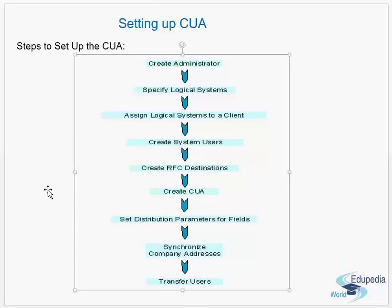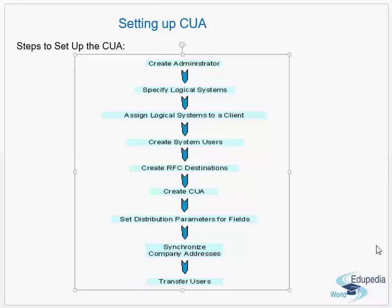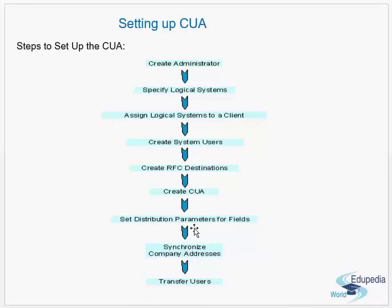You also synchronize company addresses between the source and the target system, and then transfer users. It works on ALE again. You need partner profiles which in turn have RFC destinations. You need to set up some parameters in those partner profiles. All these things — partner profiles and their parameters — will be discussed in the ALE concept.